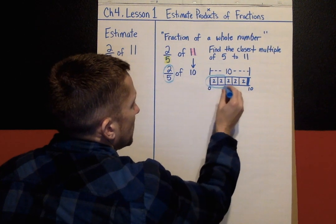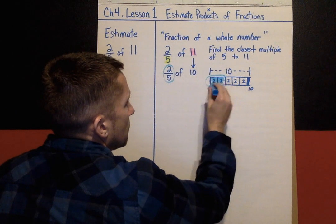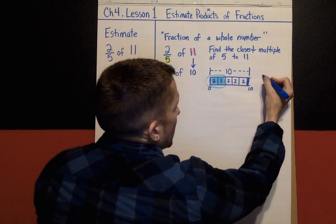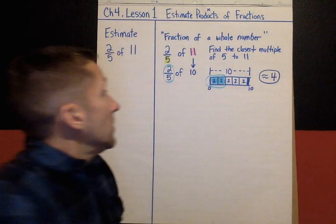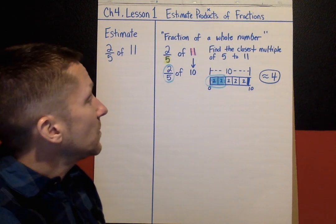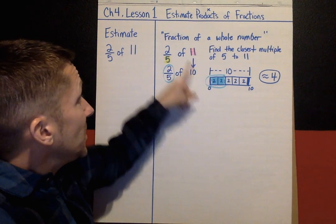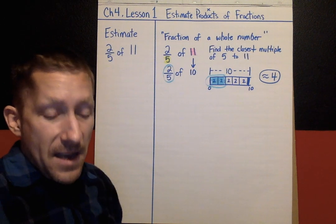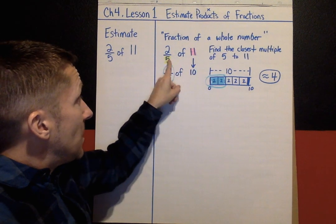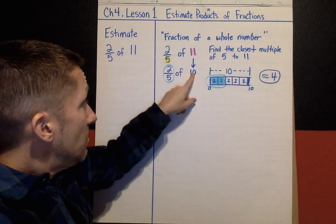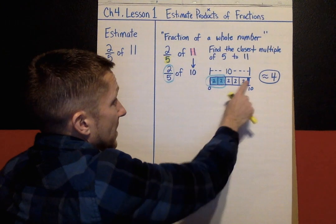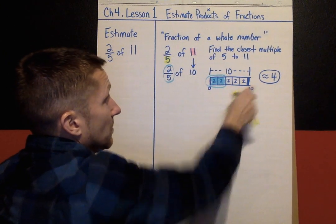I want two-fifths of ten, so I want two of the boxes. Two boxes, each worth two, gives me four. My estimate for two-fifths of eleven is about four. So the strategy is: look at your denominator, skip count by your denominator to get as close as you can to the whole number, build a bar model for that adjusted number, divide it into the right parts, and read off your estimate.